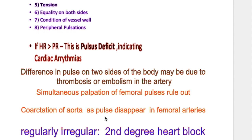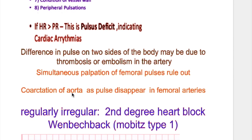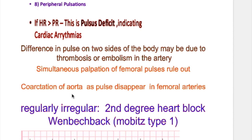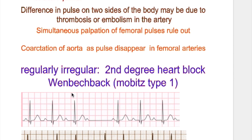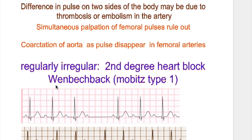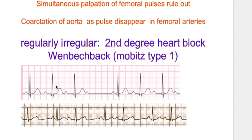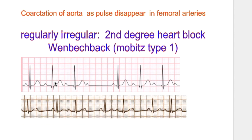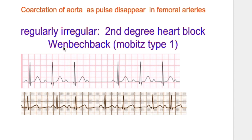In coarctation there is hypertension in the upper body and hypotension in the lower body. What are the abnormalities in the rhythm of the pulse? The pulse may be regularly irregular or irregularly irregular. A regularly irregular pulse occurs in second degree heart block — Wenckebach, Mobitz type 1.